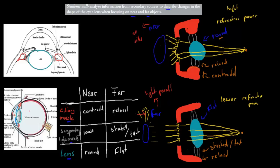That's what you need to know for this dot point — the different structures and how they look for near versus far vision. For near vision: ciliary muscles contract, suspensory ligaments are loose, lens is round, because there's less pressure on the lens. For far vision: ciliary muscles relax, suspensory ligaments are stretched, and they pull the lens flat. Essentially the ligaments are pulling the lens apart, making it flatter.